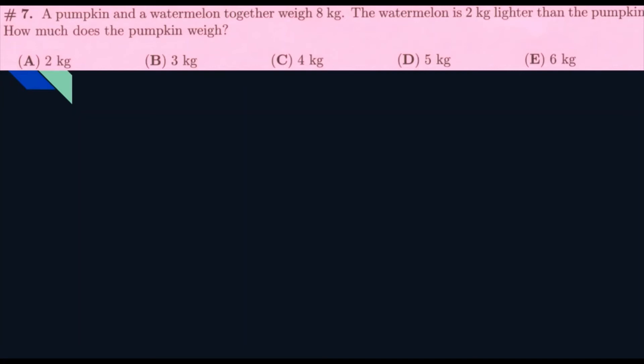Question seven. A pumpkin and a watermelon together weigh eight kg. The watermelon is two kg lighter than the pumpkin. How much does the pumpkin weigh? So, they gave us from two kg to six kg options. So, if the watermelon is two kg lighter, we can just subtract two from the pumpkin that they give answers for. And, we add the answer that we got after we subtracted it with the answer that they gave us. And, we have to get eight. So, if we subtract two from two kg, we get zero plus two, which is two. For B, we will get one plus three, which is only four. Then, for C, we get four minus two, which is two. Then, two plus four is six. So, that won't work. Five would be three plus five, which is eight. So, our answer would be D, five kg.